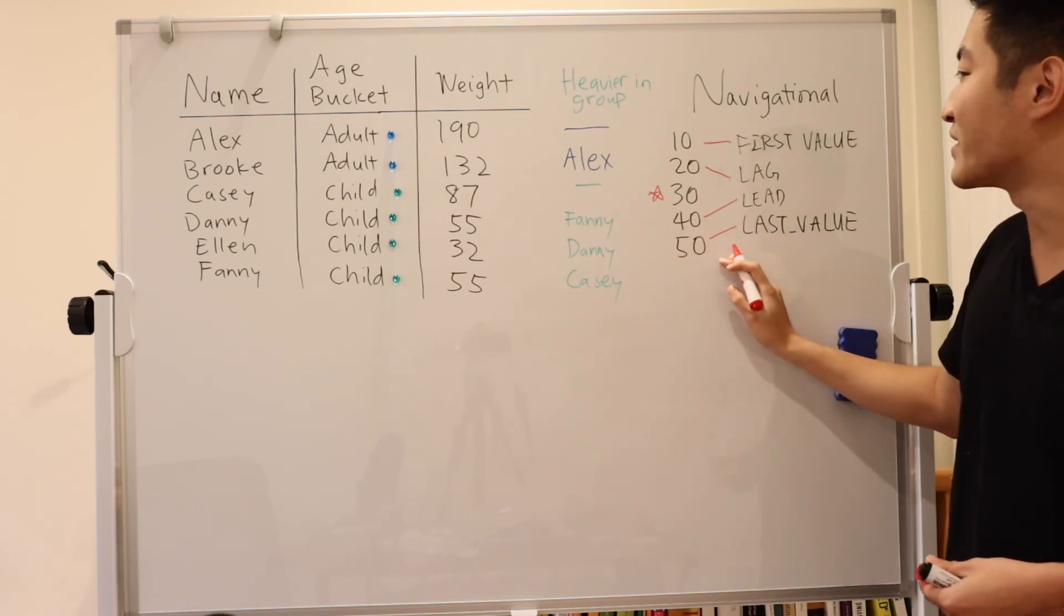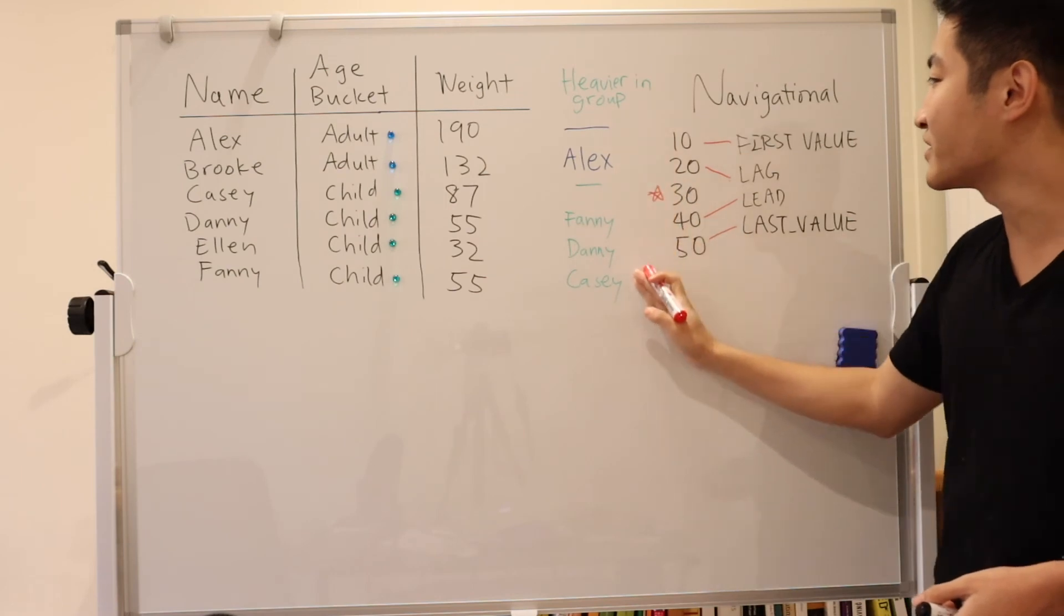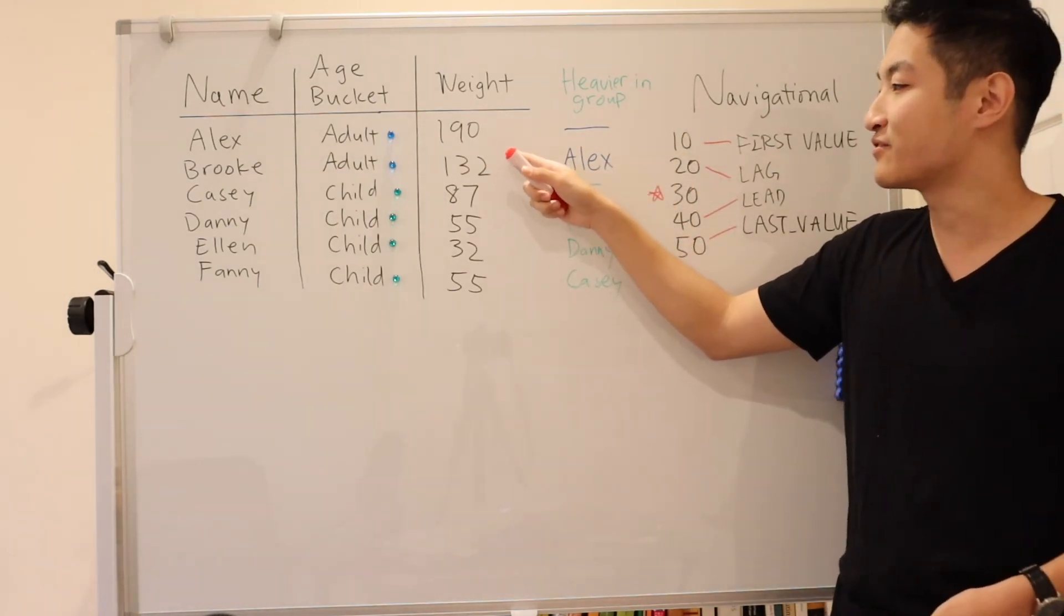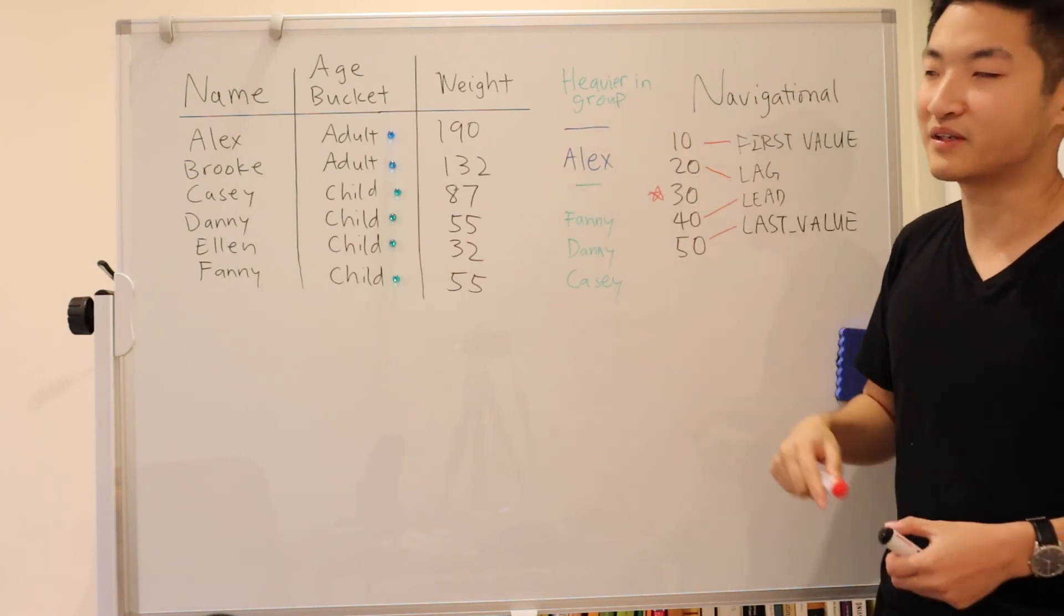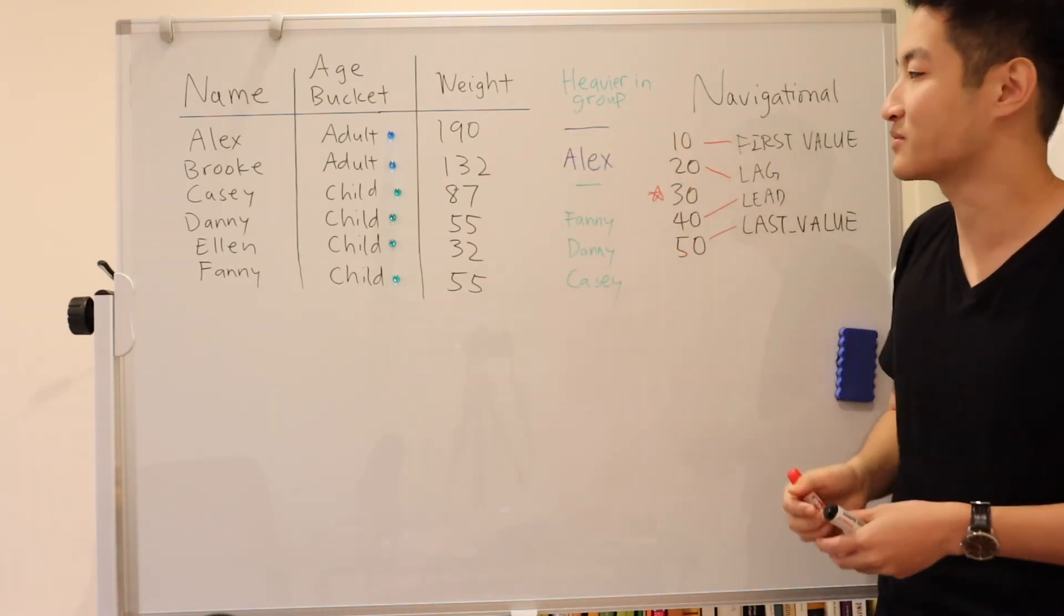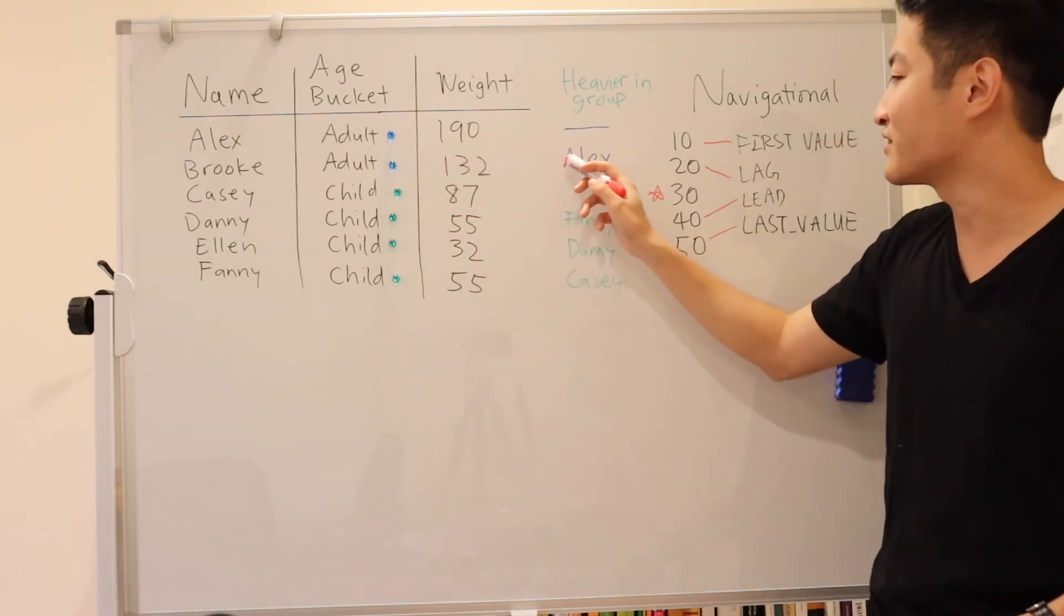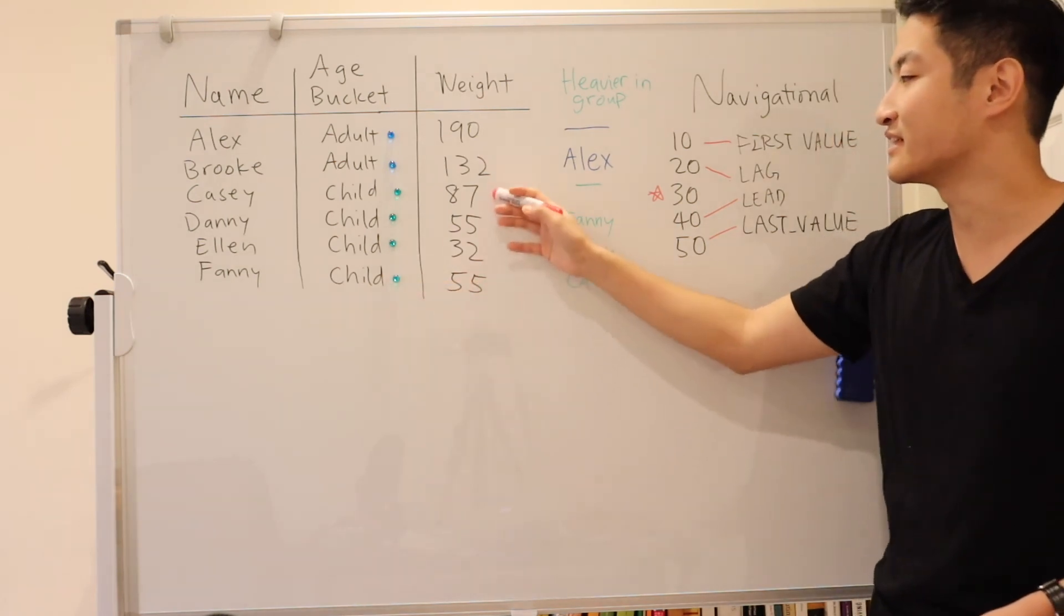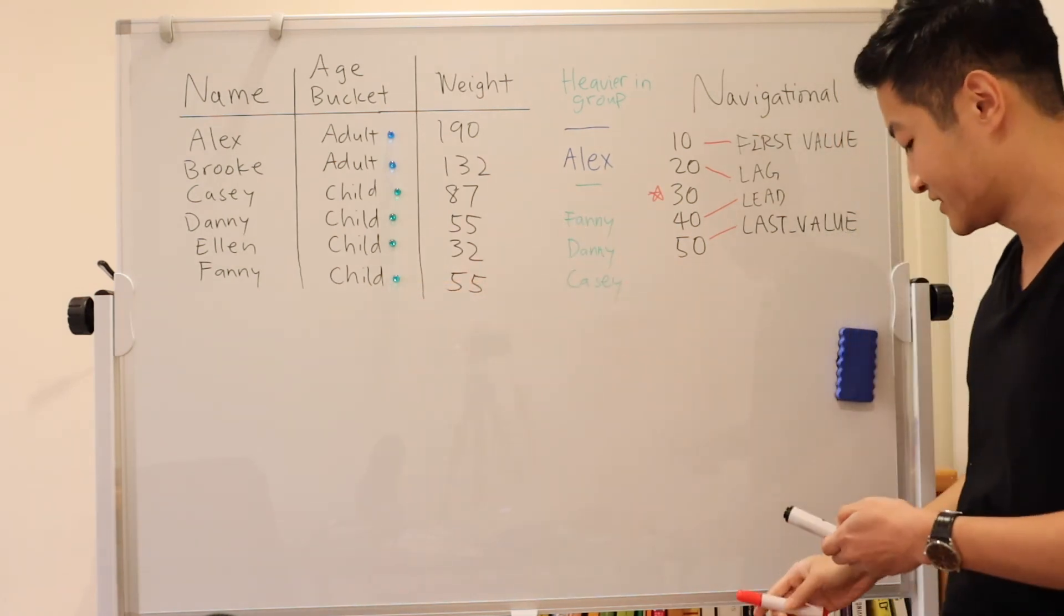So with that in mind, we have a problem here where we need to find the heavier person of a given row in the age bucket. So Alex and Casey are the heaviest. We don't need to return a name. For Brooke, the heavier person is Alex. For Fanny, the heavier person is Casey. How do we express this in SQL?